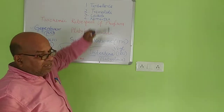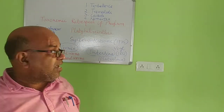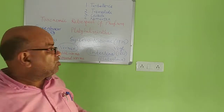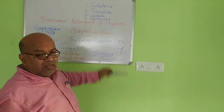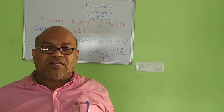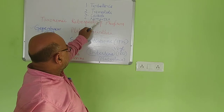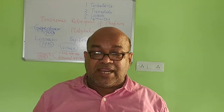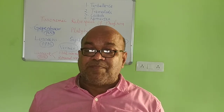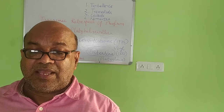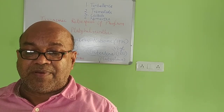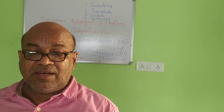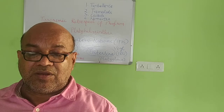The second class is known as Trematoda — T-R-E-M-A-T-O-D-A. The third one is known as Cestoda — C-E-S-T-O-D-A. The fourth one is called Nemertea — N-E-M-E-R-E-A. So Gegenbaur in 1859 classified the entire Platyhelminthes into four different classes: Turbellaria, Trematoda, Cestoda, and Nemertea.